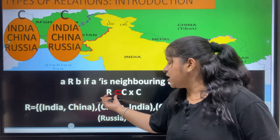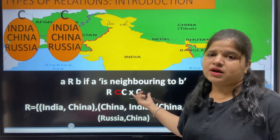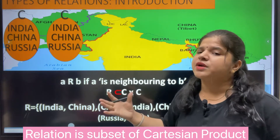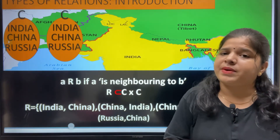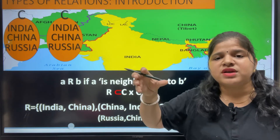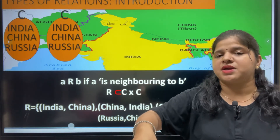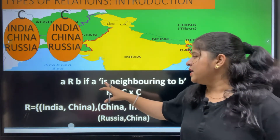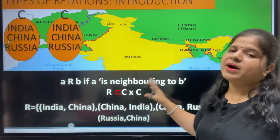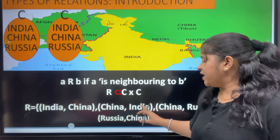What we see is that one country is related to the other countries. Here, we see that we have two sets, with elements India, China and Russia.